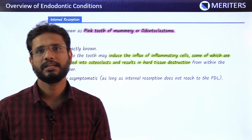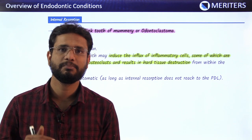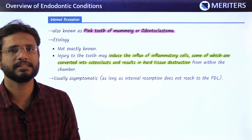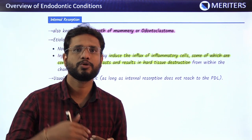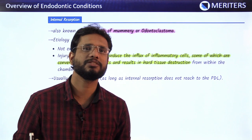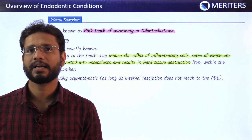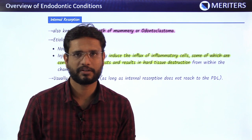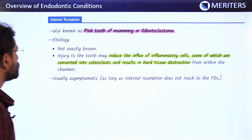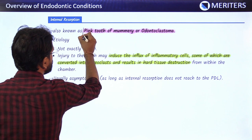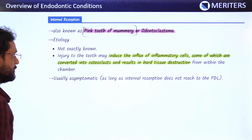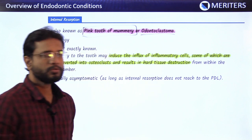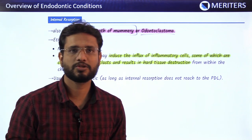Radiographically, it is very difficult to differentiate if both walls are totally engaged. If complete resorption has occurred from the pulpal side towards the outer side, it is very difficult to diagnose whether it is external or internal resorption radiographically. Internal resorption is also known as 'pink tooth of mummery' — very important for the exam — and also as odontoclastoma. These are the two names given to internal resorption.